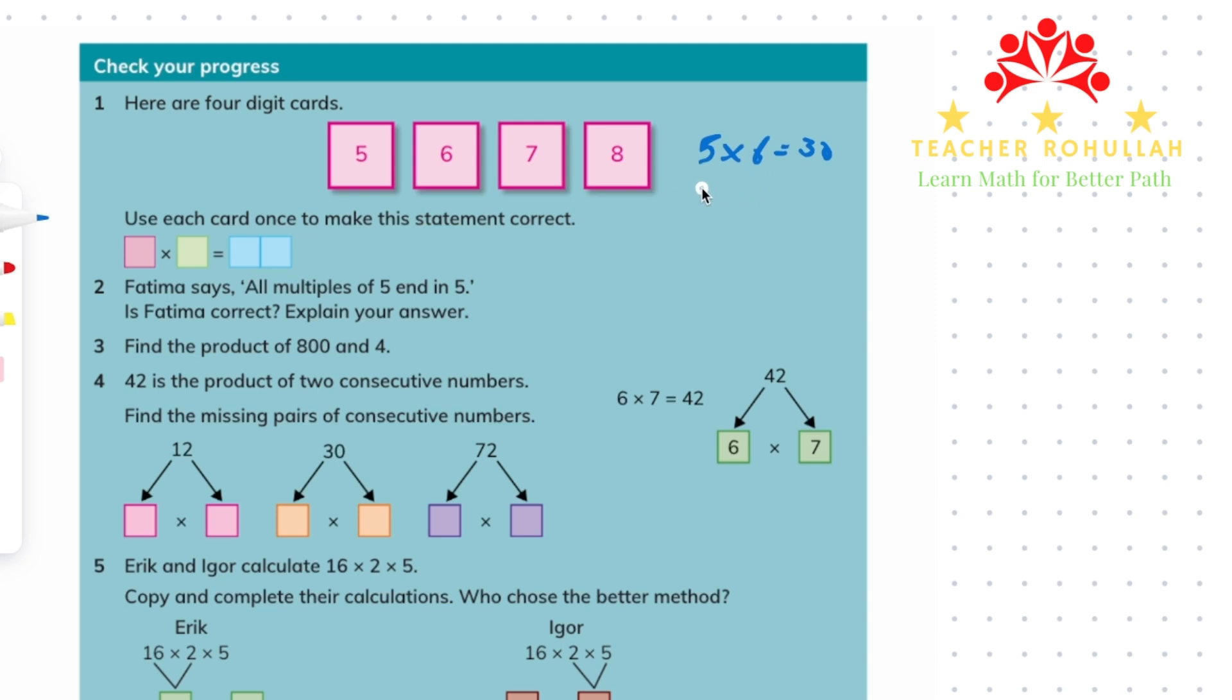What if we use six times seven? Six times seven is forty-two. Again we don't have the digits for the product. What if we multiply seven and eight? Seven times eight is equal to fifty-six.